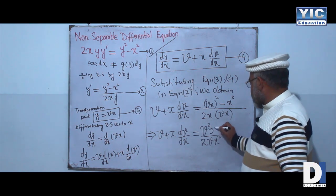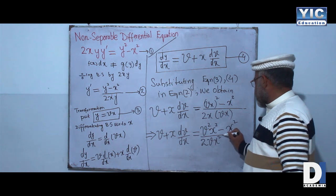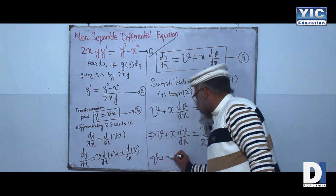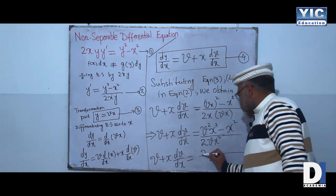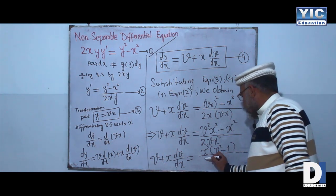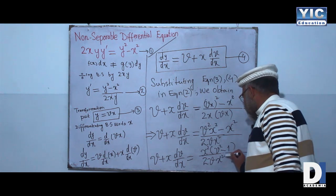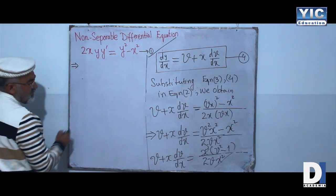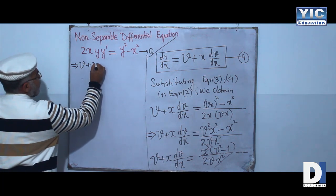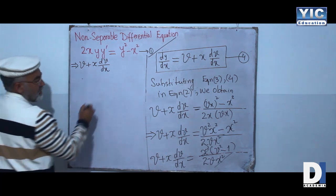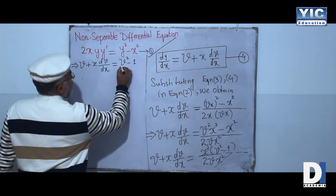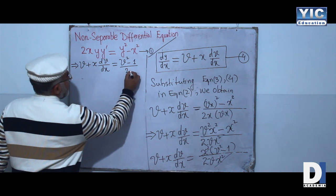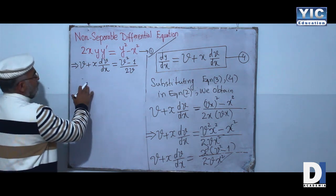Taking x² common in the right-hand side numerator gives x²(v² - 1), and the denominator is 2vx². The x² cancels, so this implies that v + x(dv/dx) = (v² - 1) / 2v.